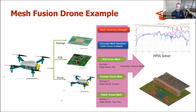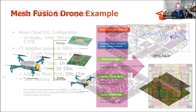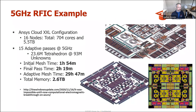Another example is a mesh fusion drone model. Within the drone we have a PCB board, a package on the PCB board, and then the drone itself with all its different components and assemblies. Using FEE meshing for the PCB and the package combined with the drone, we can mesh all of these in parallel and get time savings. An even more complex example is a 5 GHz RFIC with individual coils on a circuit board, different connectors, and many components — using 700+ cores and HPC to save significant time on complex designs.